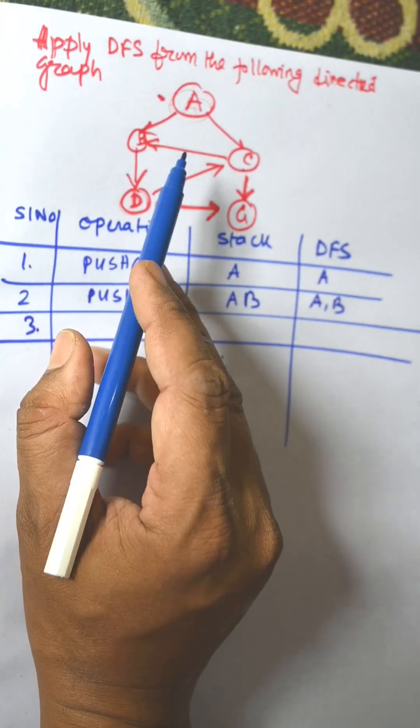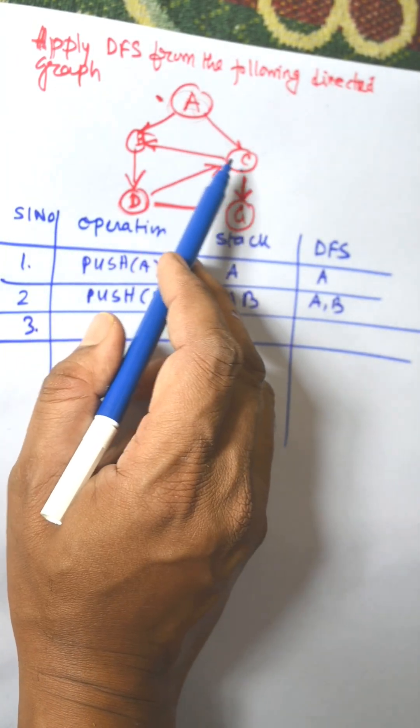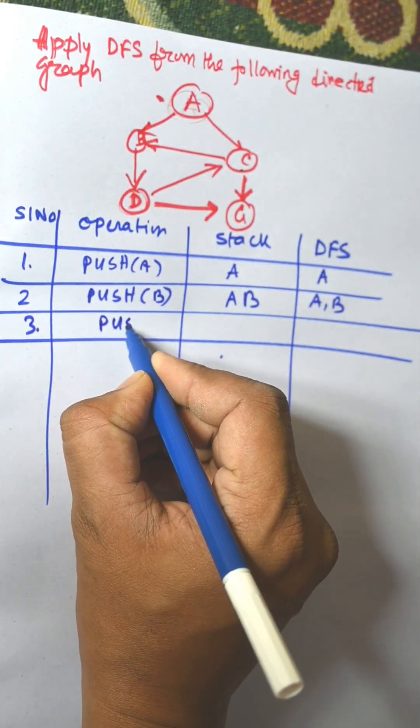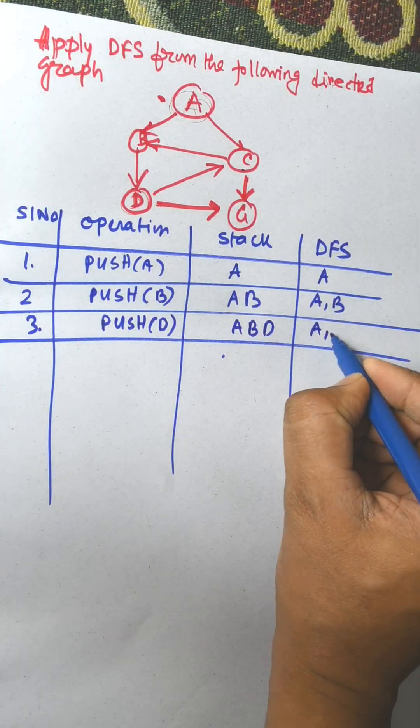Now next from B we need to visit D. According to direction we need to visit D. That is push D. Stack is A B D, answer is A B D.